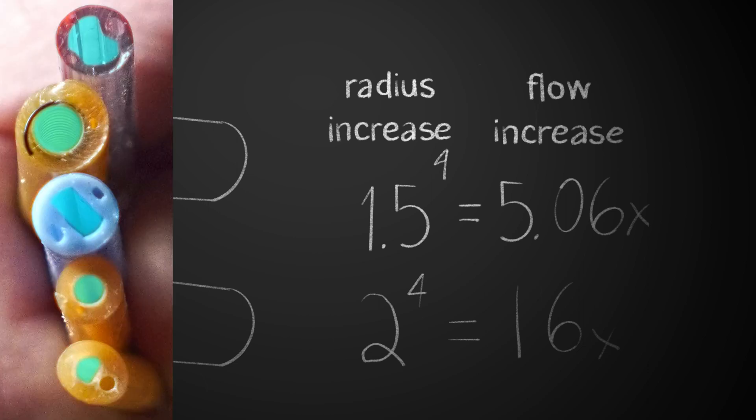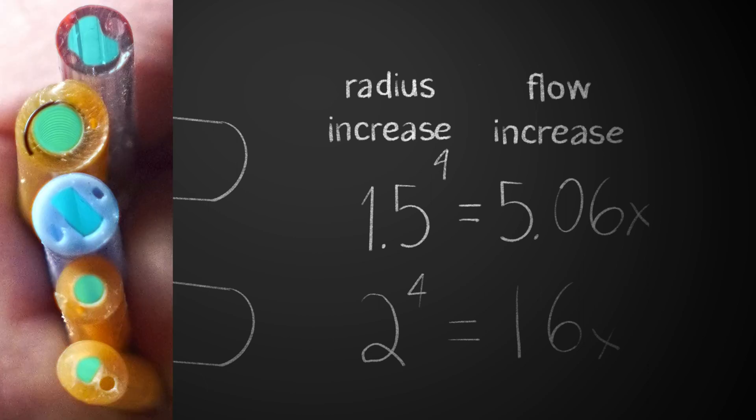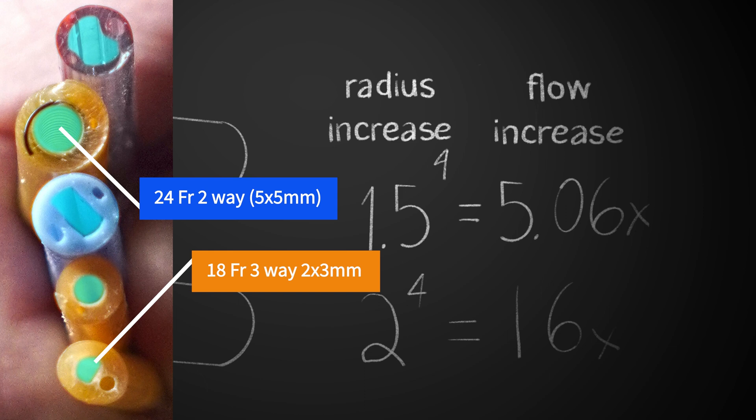So small increases in the radius of the lumen of the catheter have an astounding impact on how much you can irrigate through that catheter. If that catheter has a narrow lumen or collapses when aspirating, the amount of flow or pressure that you can pull through that tube decreases dramatically.